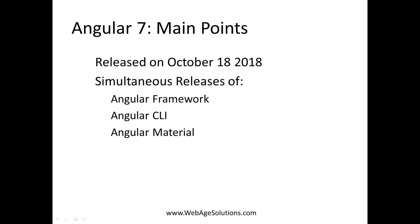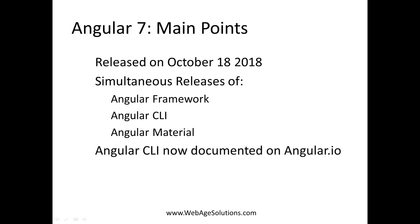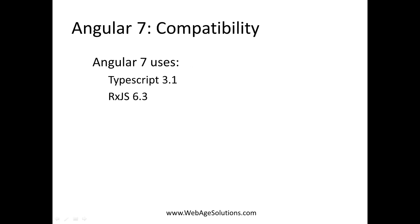Angular 7 was released on October 18th, 2018. It included the simultaneous release of the Angular framework itself, Angular CLI — which is the command line interface that allows you to create new projects, components, services, and things like that — and Angular Material, which is a component library that implements Material Design. You should also know that Angular CLI is now documented on the angular.io site, so you can search there and find all the Angular CLI commands documented. This version of Angular is compatible with TypeScript 3.1 and RxJS 6.3.